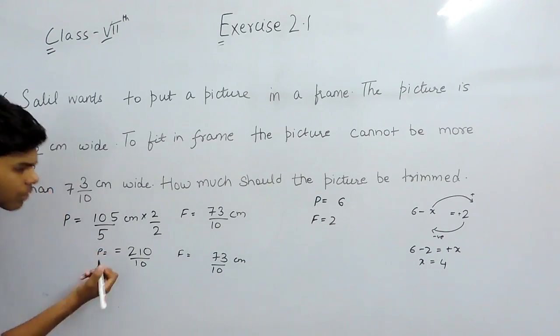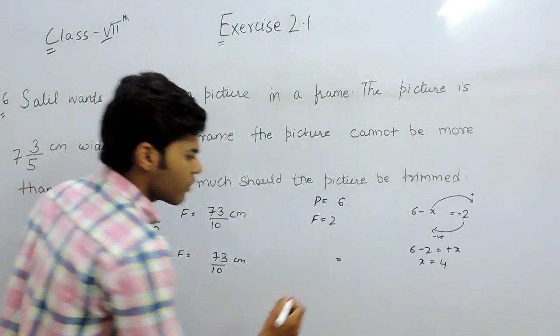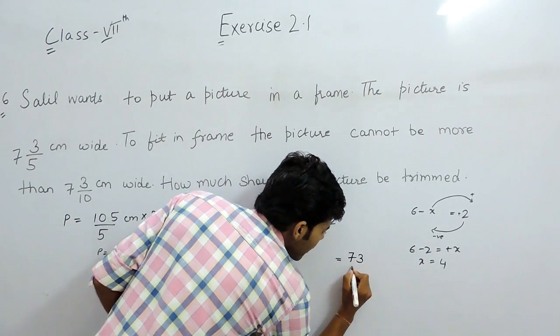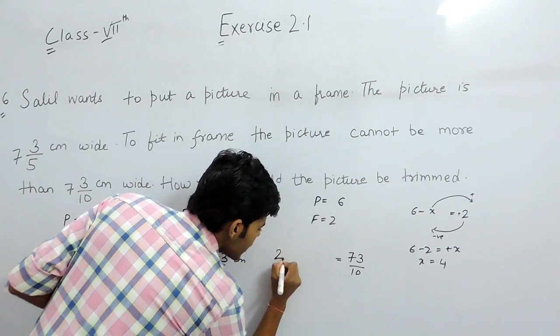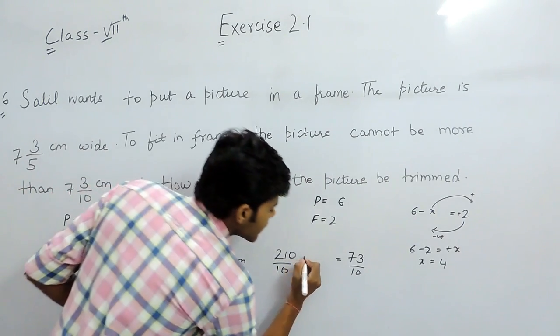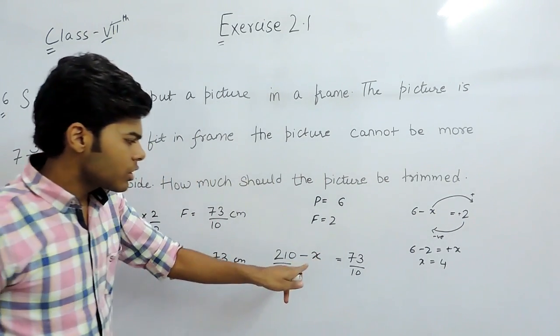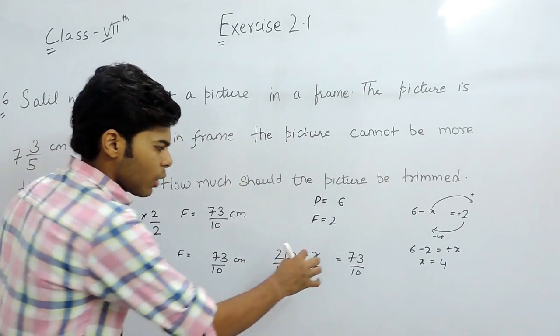So we will do like this. We want the picture to be of the width 73 upon 10 cm. The original width of the picture is 210 upon 10 cm. Now we will subtract something which we should subtract so that we get the answer as 73 upon 10.